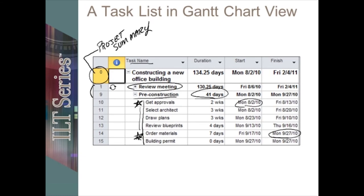Any column you see can be filtered, reordered, added, or removed without affecting the data inside. Last but not least, we have our indicator column. This is where you see all the messages of things that you might want to know about, whether it's an over-allocated resource or a note that someone has added.